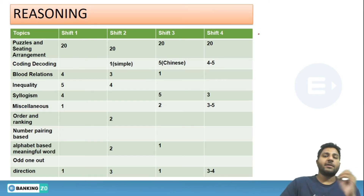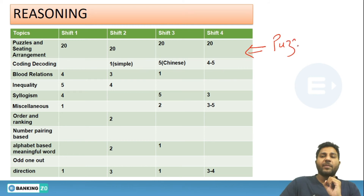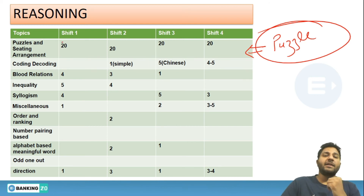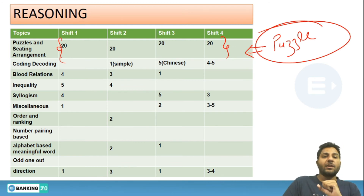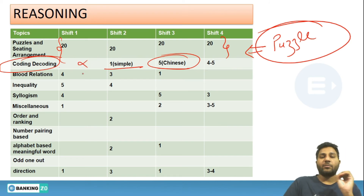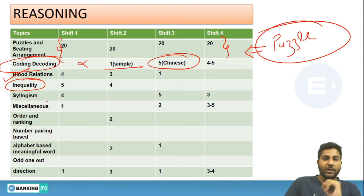In the reasoning section, it is also predictable that one section got the majority of questions — and that section is puzzles. They continuously asked 20 questions from puzzles and seating arrangement. On several occasions they asked coding-decoding: simple coding on one occasion, Chinese coding-decoding on another, and the first shift skipped that portion. Blood relations were asked on a couple of occasions.